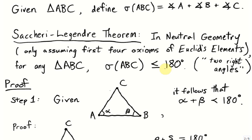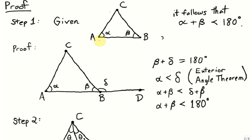This proof is rather long — it's divided into four steps. The first step says that given any triangle ABC, the sum of any two angles is less than 180 degrees.